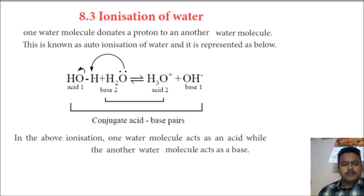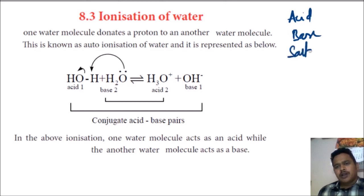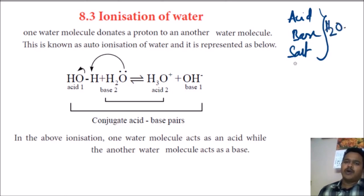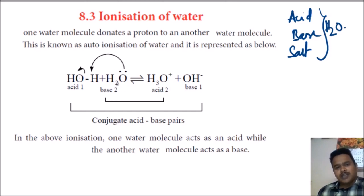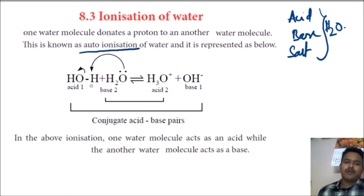For the ionization of water, initially we studied that any substance — acid, base, or salt — can undergo ionization only in the presence of water, in aqueous medium. Now this is the case of water itself. Water also can undergo ionization in the presence of water. So here both molecules are H2O. Between the two water molecules there is an ionization, which is why it is called auto-ionization — because both are water molecules.